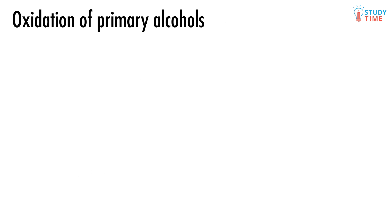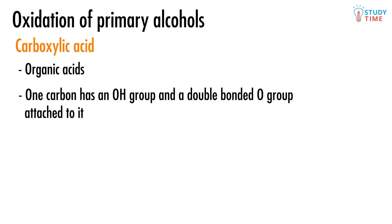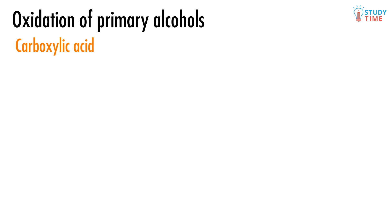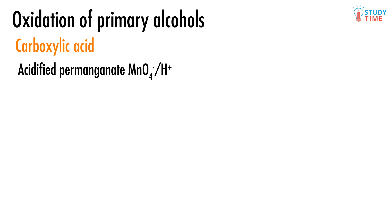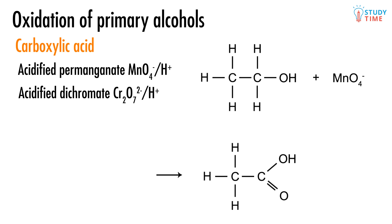Whenever we have a primary alcohol, we can oxidize it. When we do this, we form a carboxylic acid. Carboxylic acids have a carbon with both an OH group and a double-bonded O group attached to it. When we oxidize an alcohol, we need to use an oxidant — either acidified permanganate or acidified dichromate. In the oxidation of ethanol, what we end up with is a carboxylic acid called ethanoic acid.